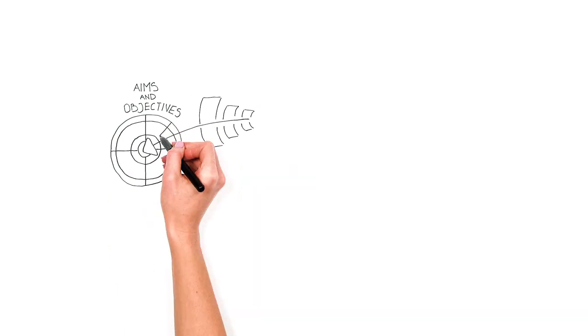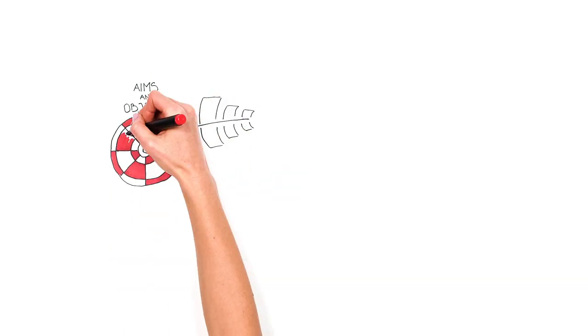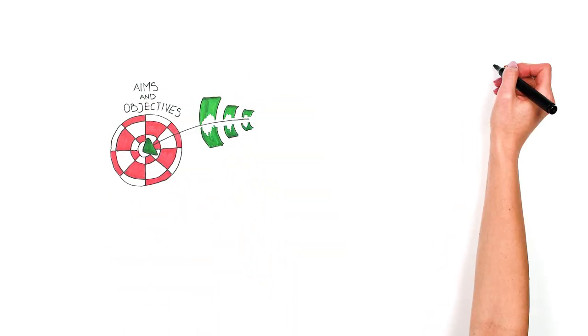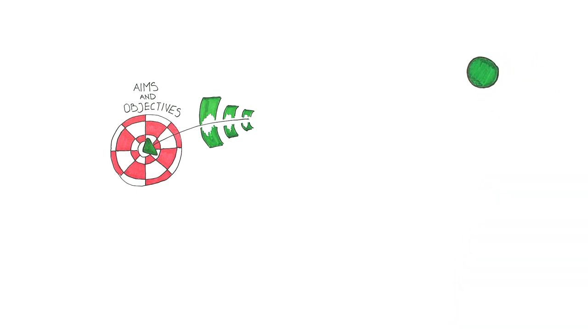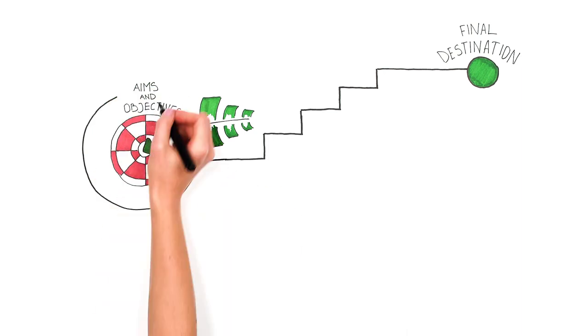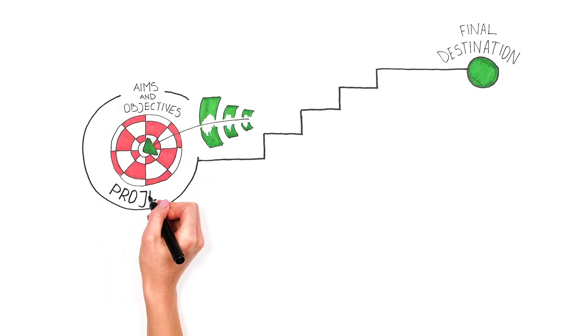About the definition of aims and objectives, the aim is what you want to achieve in general and what the final destination of your project is. Objectives are the steps to be taken to reach the final destination. They explain what you will actually do to achieve your aim.